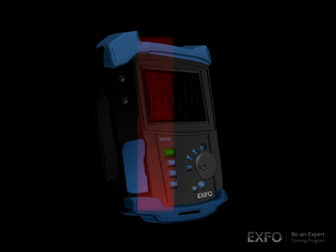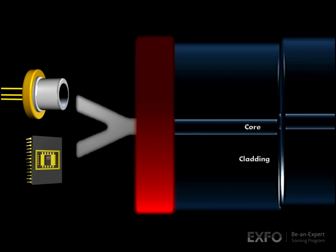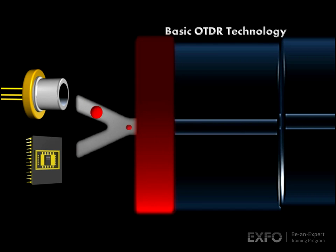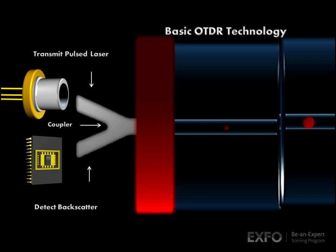Let's take a look inside the OTDR. The basic components are a transmitting laser, an optical coupler, and a receiving photo detector. The transmitter pulses light through the coupler into the core of the fiber, and the detector receives and measures light returning through the coupler.